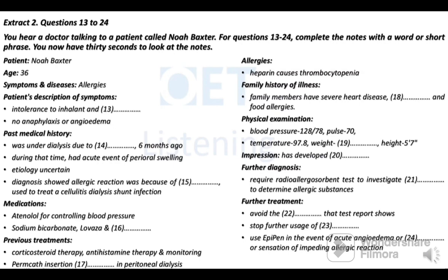Your test report shows your blood pressure is 128/78, pulse 70, temperature is 97.8, weight is 207 pounds, and height is 5 feet 7 inches. I suspect you have developed acute anaphylaxis. I would suggest you go for a radioallergosorbent test — a blood test using radioimmunoassay to investigate specific IgE antibodies, to determine the substances the subject is allergic to.